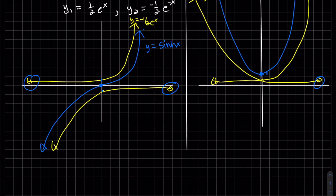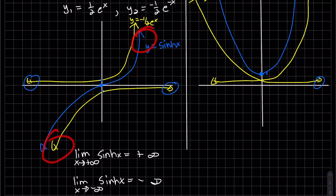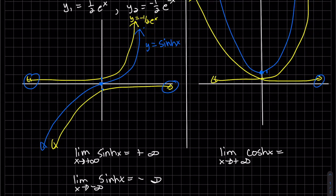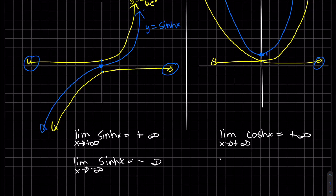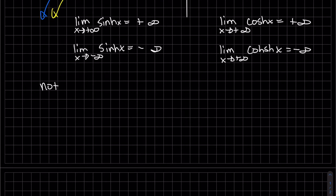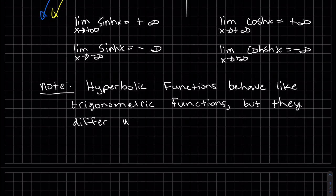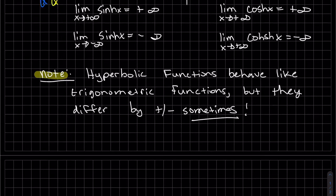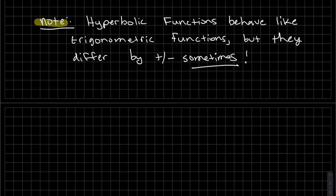We can write out our limits. Positive, negative. Looks like they're both positive. And behaviors are positive infinity. Write that out. So hyperbolic functions, they behave very similar to trig functions, but sometimes they're off by a negative. Not always.